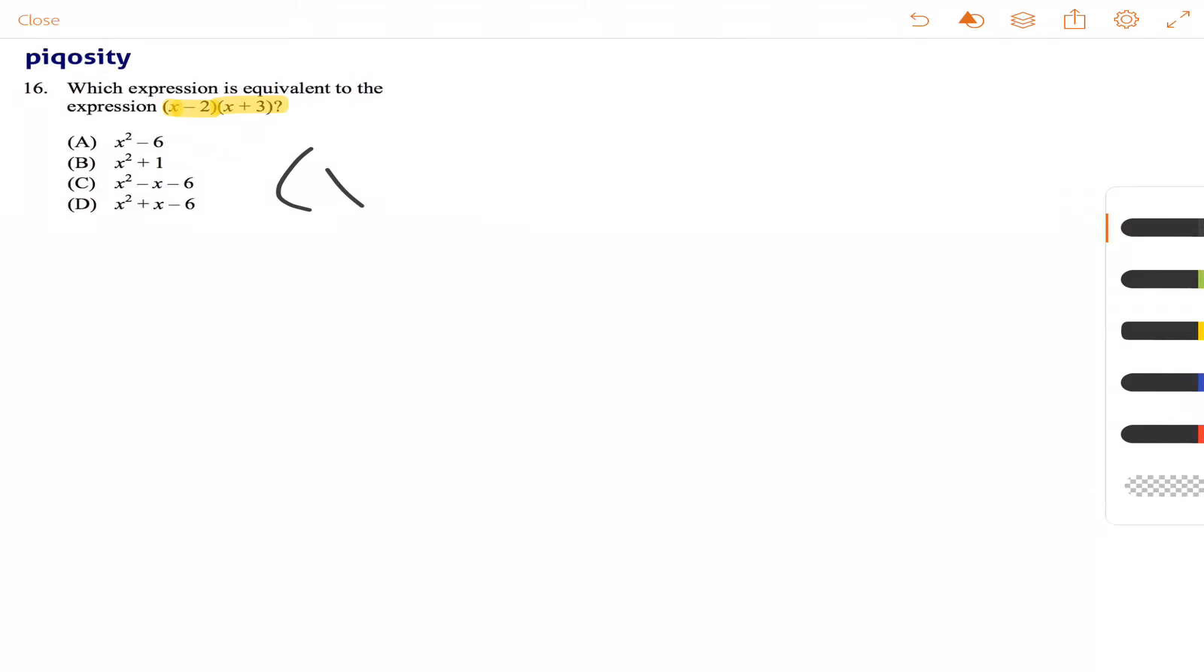So let's write this out again, (x - 2)(x + 3). And with FOIL, this is just referring to the process of making sure that you multiply everything together.